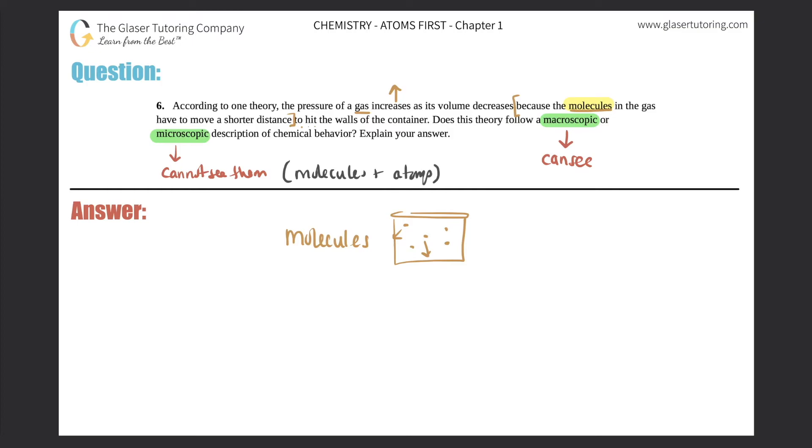Specifically, molecules and atoms. So because they're talking about molecules here, would this be classified as a macroscopic or microscopic description? This is totally a microscopic description. Why? Because part of the microscopic domain is stuff that we cannot see with our human eye, especially molecules and atoms. And that's the whole microscopic domain.